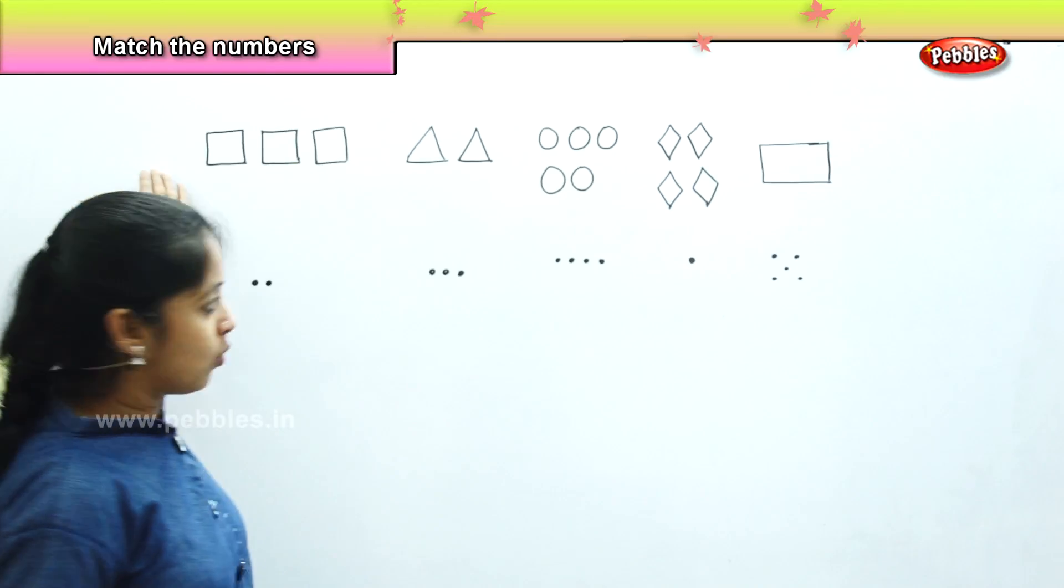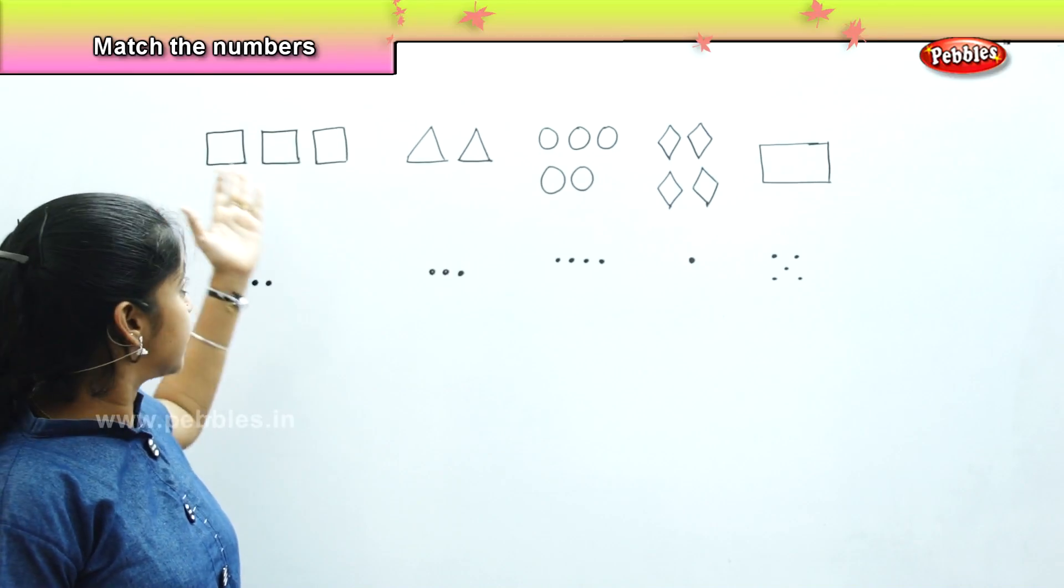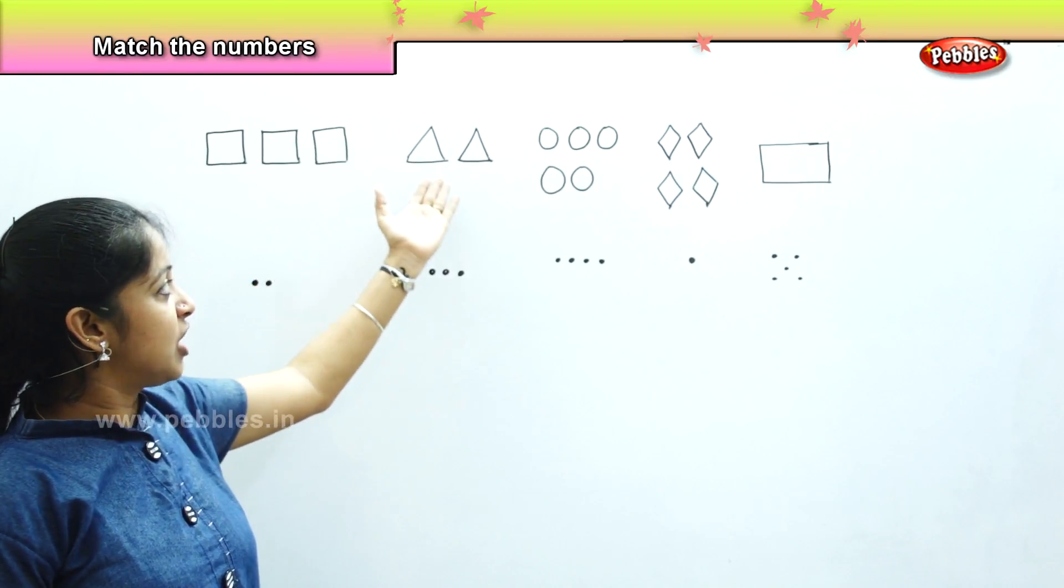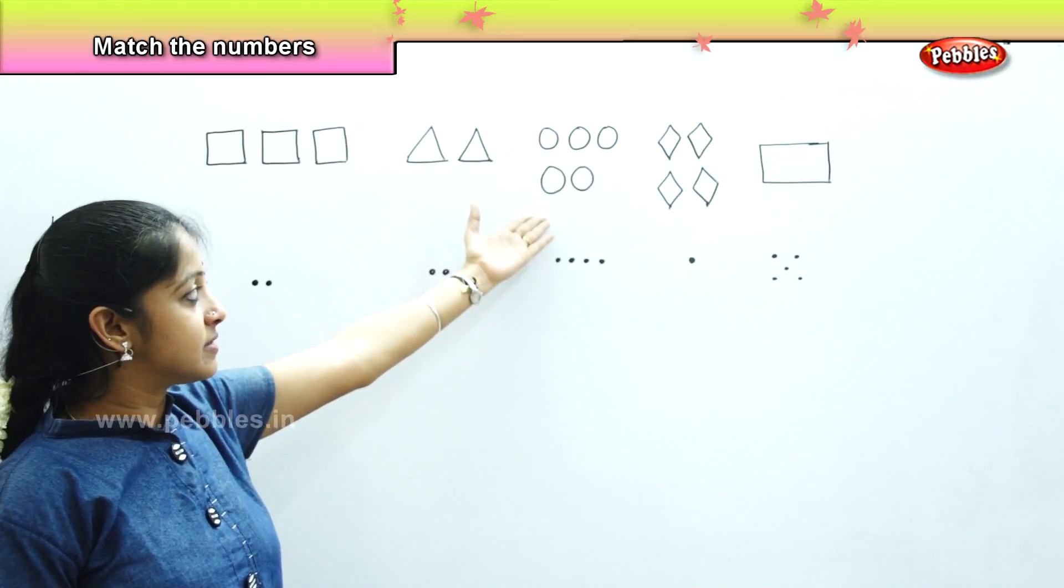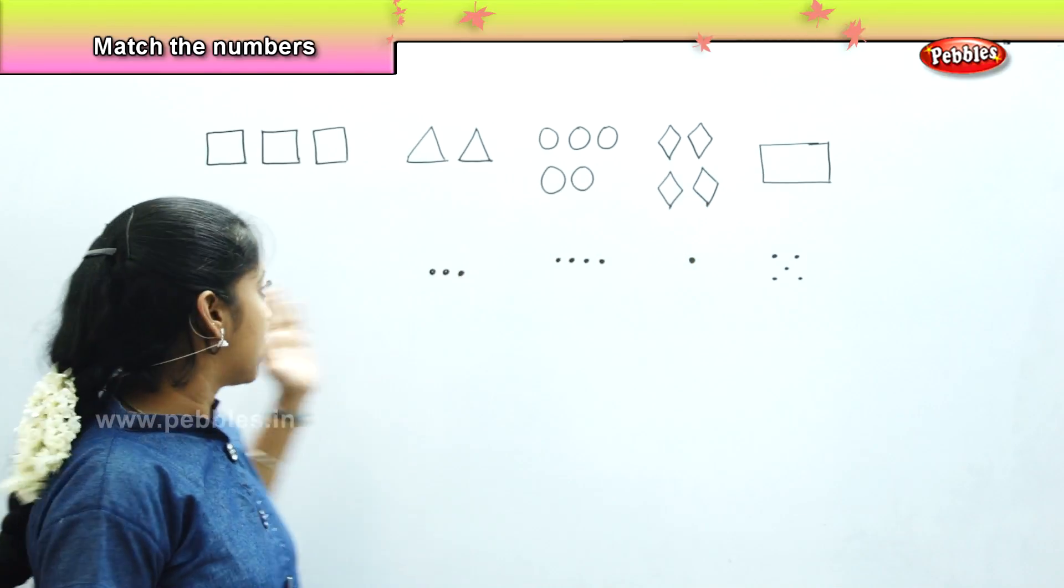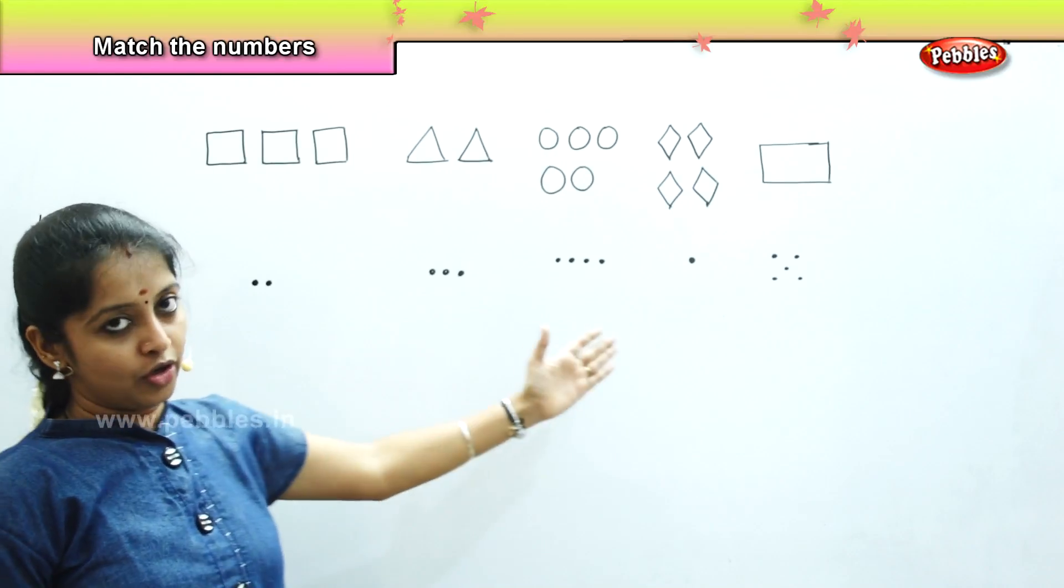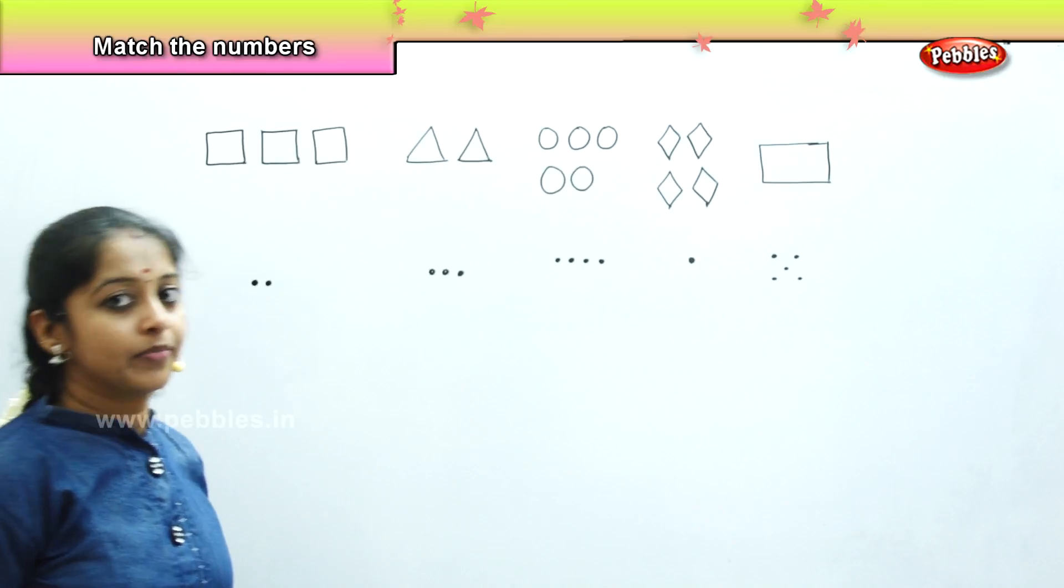What is it about? What do you see here? Here, we can see different shapes. We can see square, we can see triangle, then we have circles, diamond and a rectangle. And here, in the second line, we can see the dots. So, shall we begin? Fine.